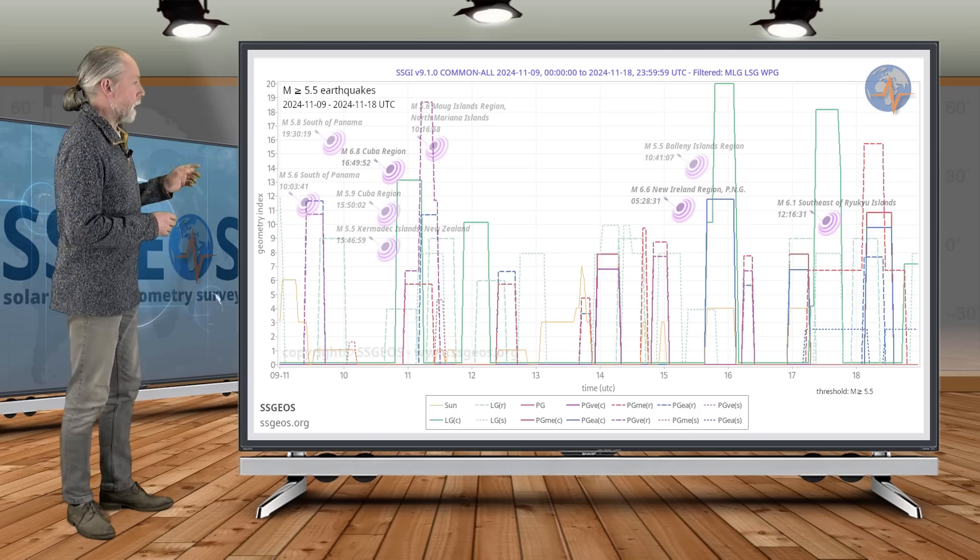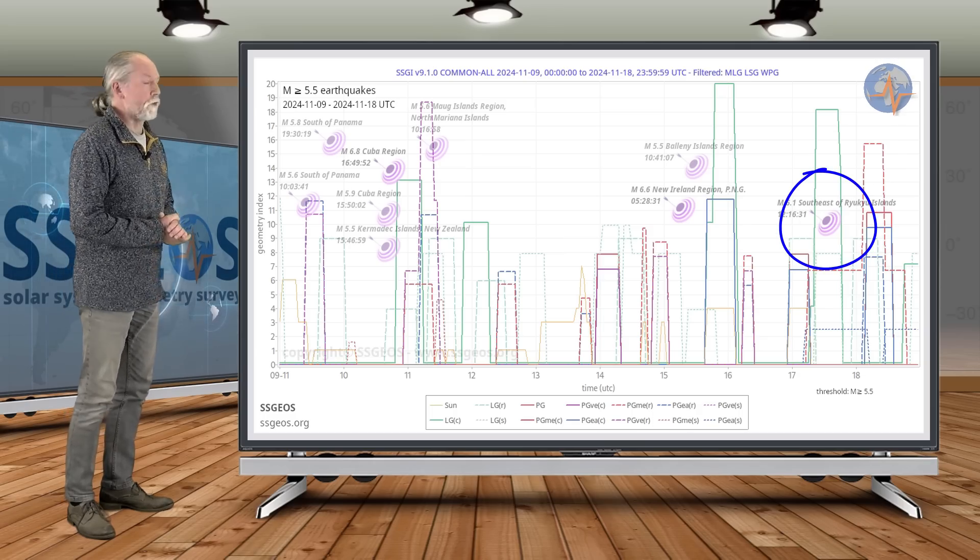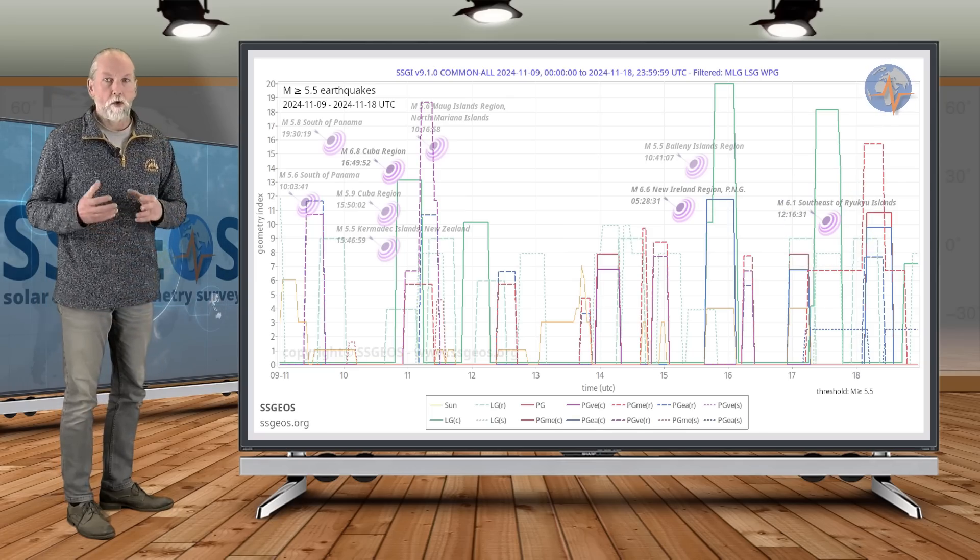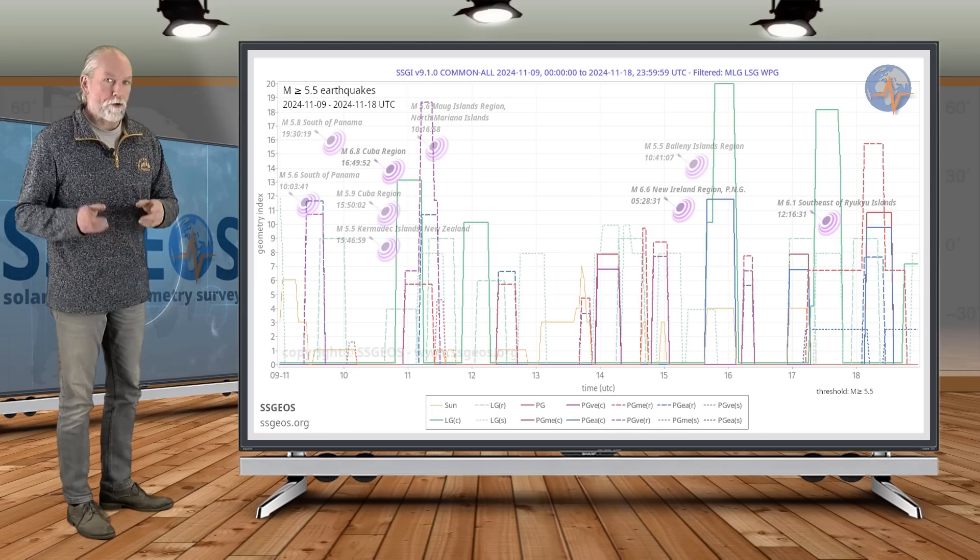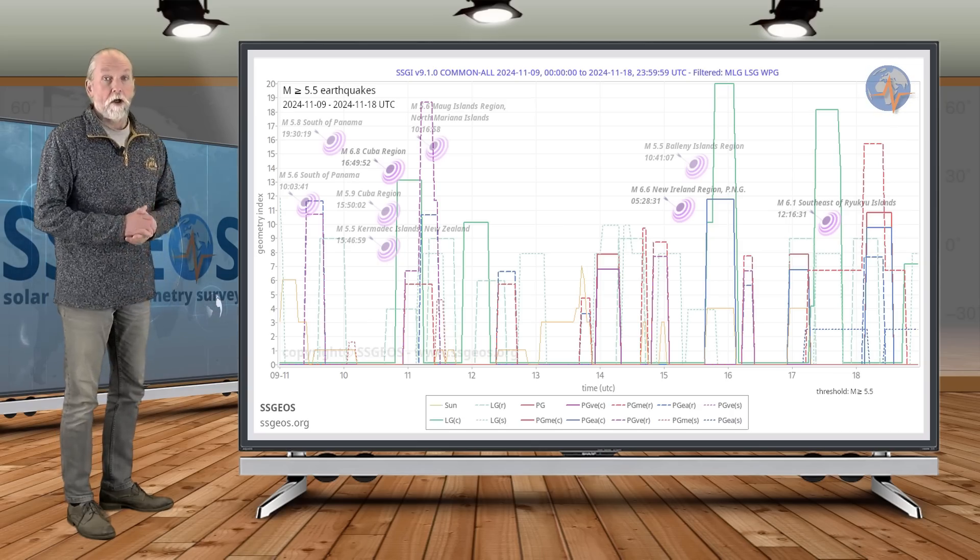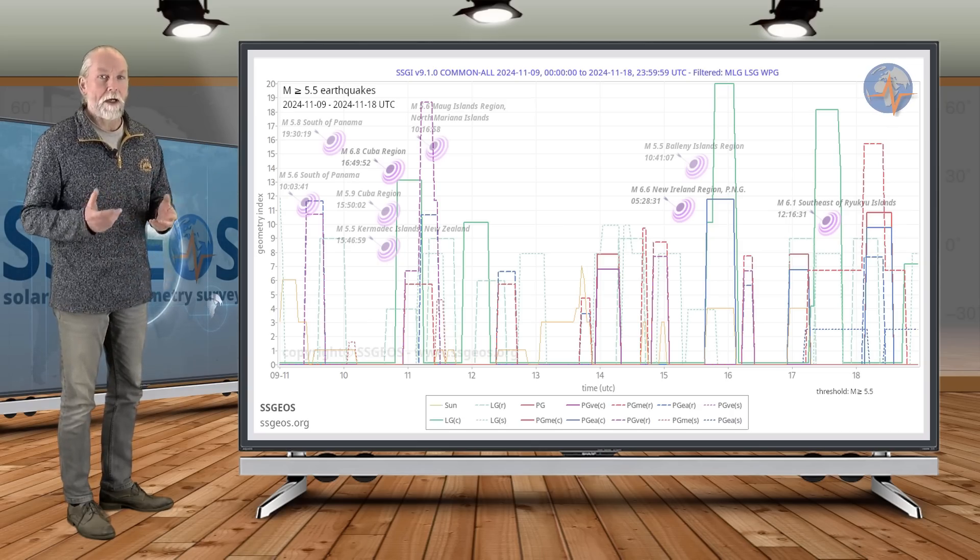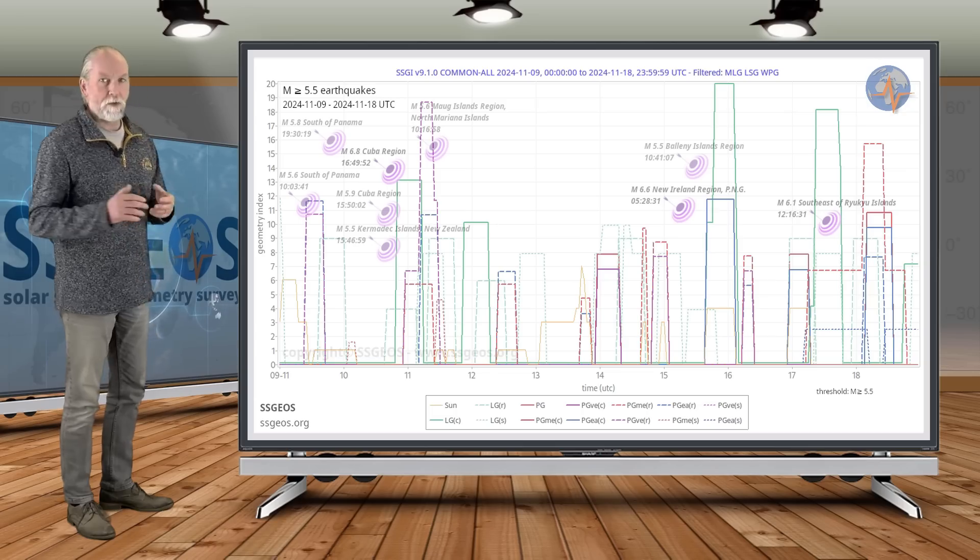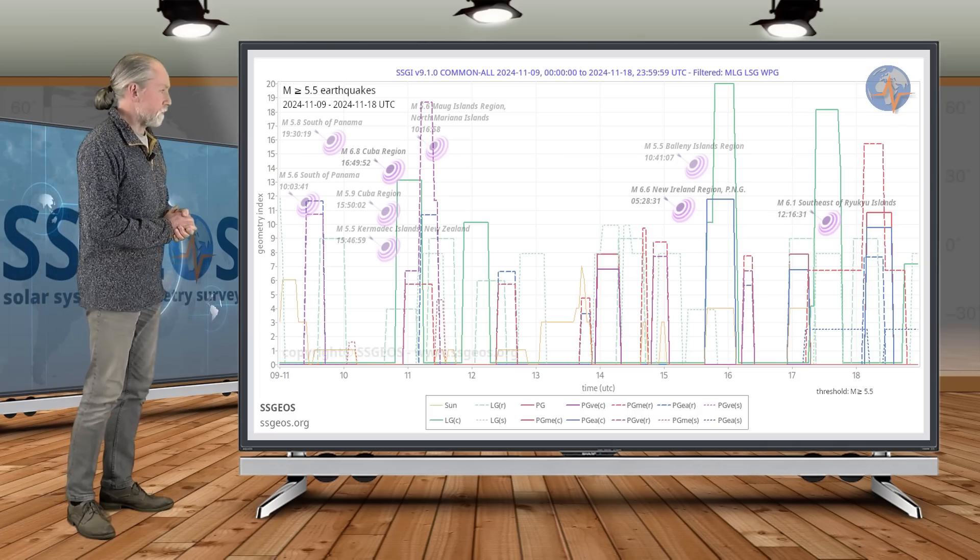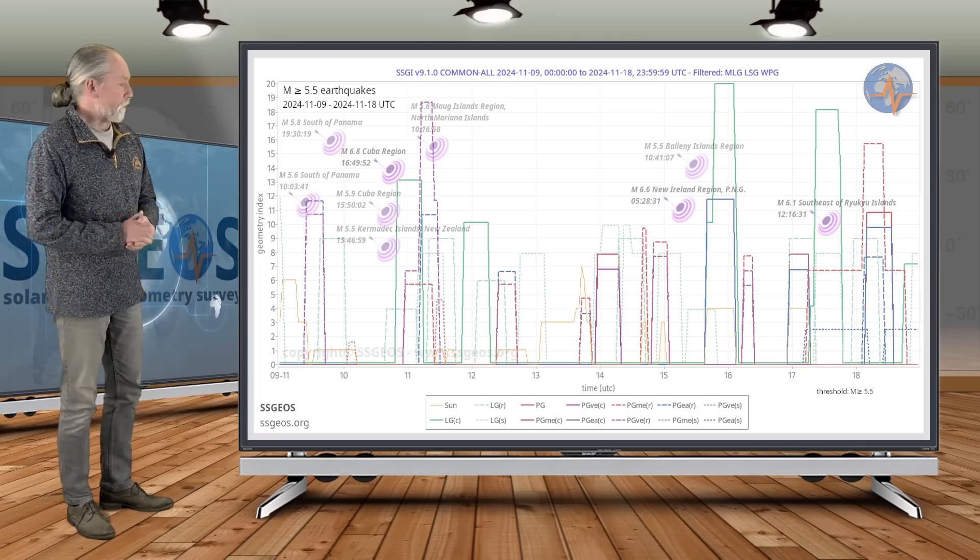But we did have a 6.1 southeast of the Ryukyu Islands near Japan on the 17th, and that was with the lunar conjunction with Jupiter that I also discussed in the previous update. Today I mentioned the 19th, that's about two and a half days from that lunar conjunction on the 17th, which brings us to the next time frame.